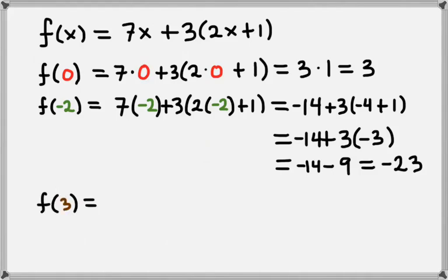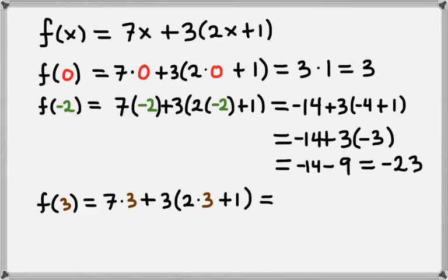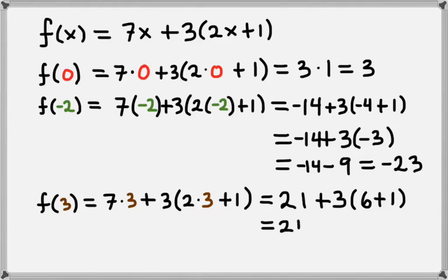Now finally let's look at f of 3. Again, we want to plug in 3 for x in both places. We need to evaluate this and simplify. So we have 7 times 3 is 21. And now inside the parentheses we have 2 times 3 plus 1, so that leaves us with 6 plus 1, which is 7. Then we have 21 plus 3 times 7, which is 21. So now we have 21 plus 21, which gives us 42. So f of 3 equals 42.